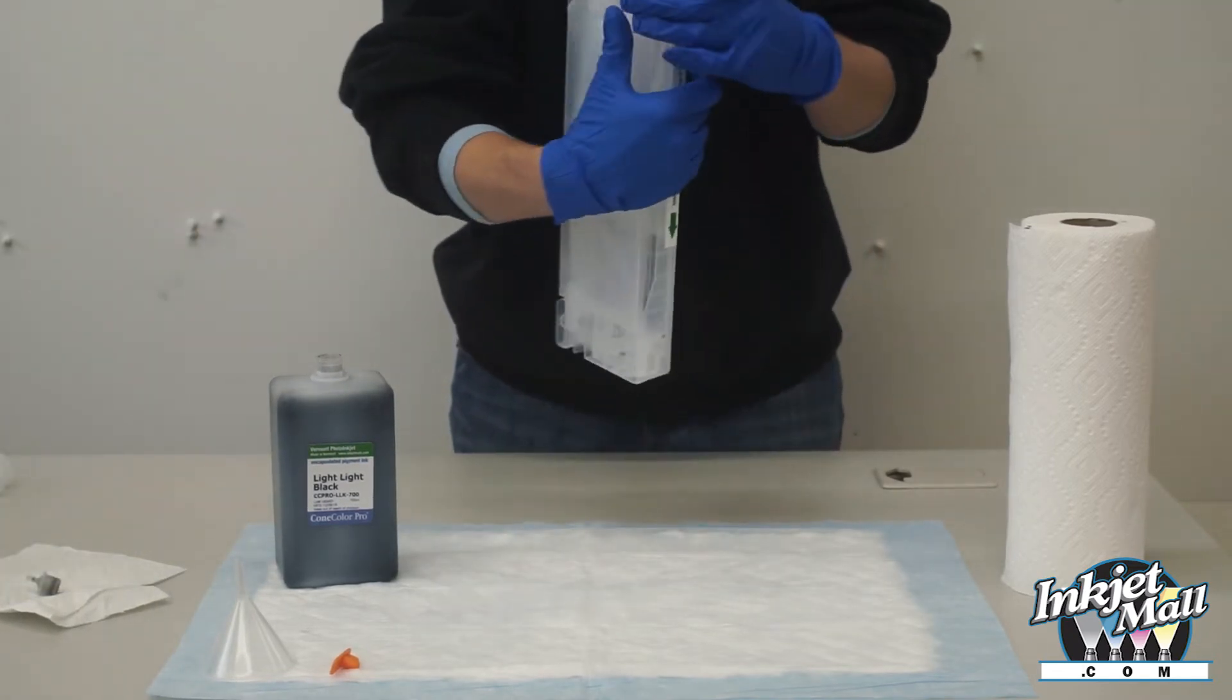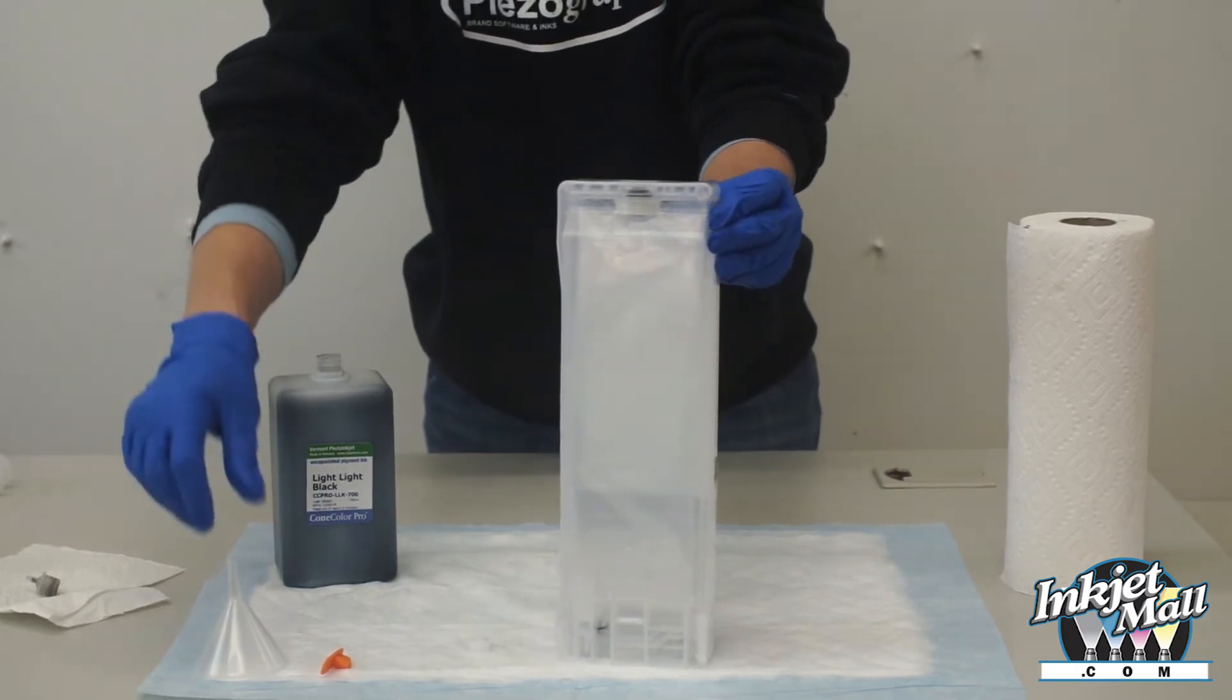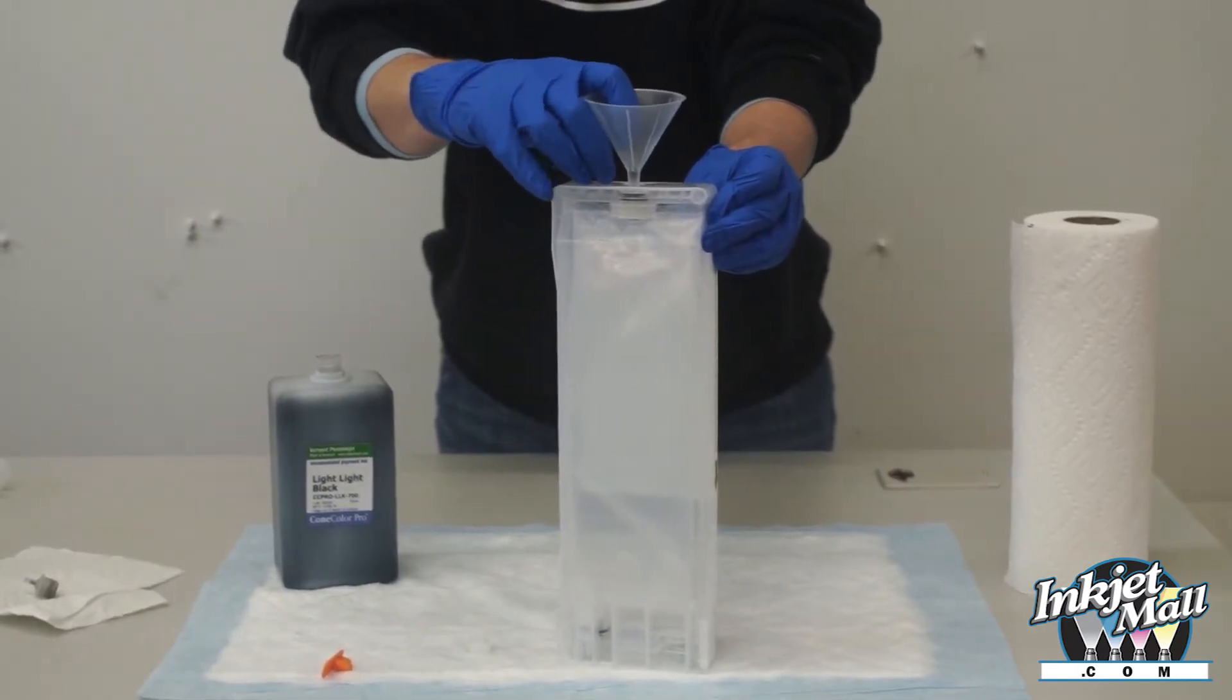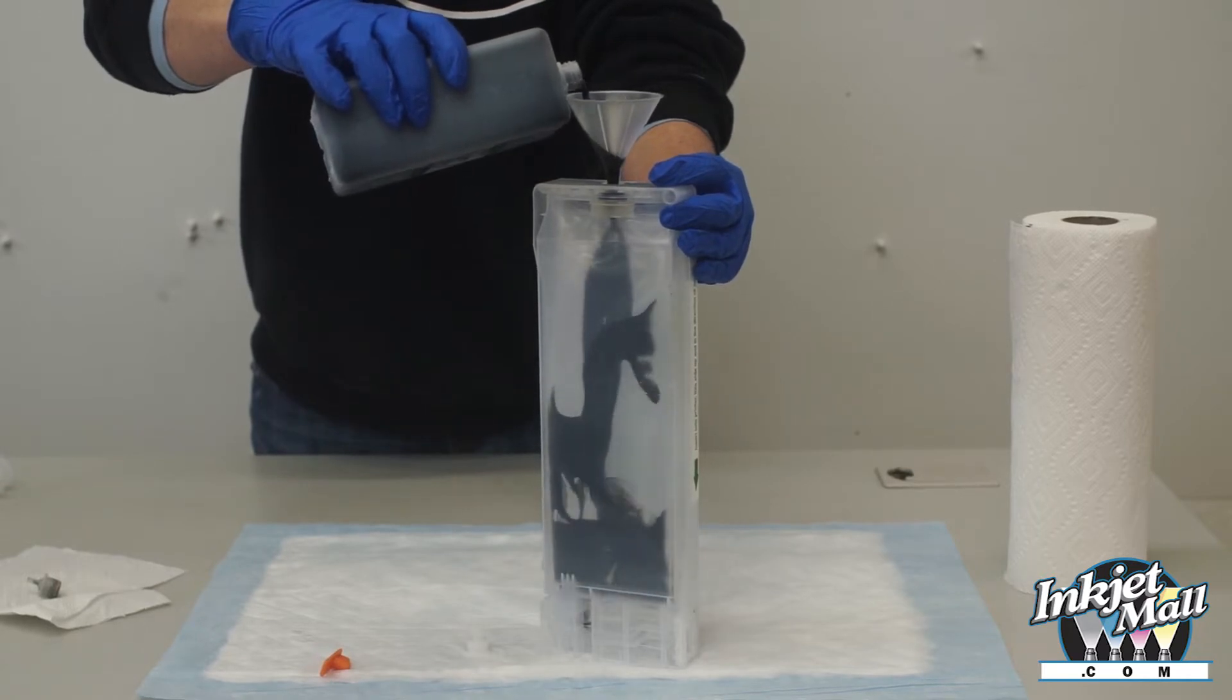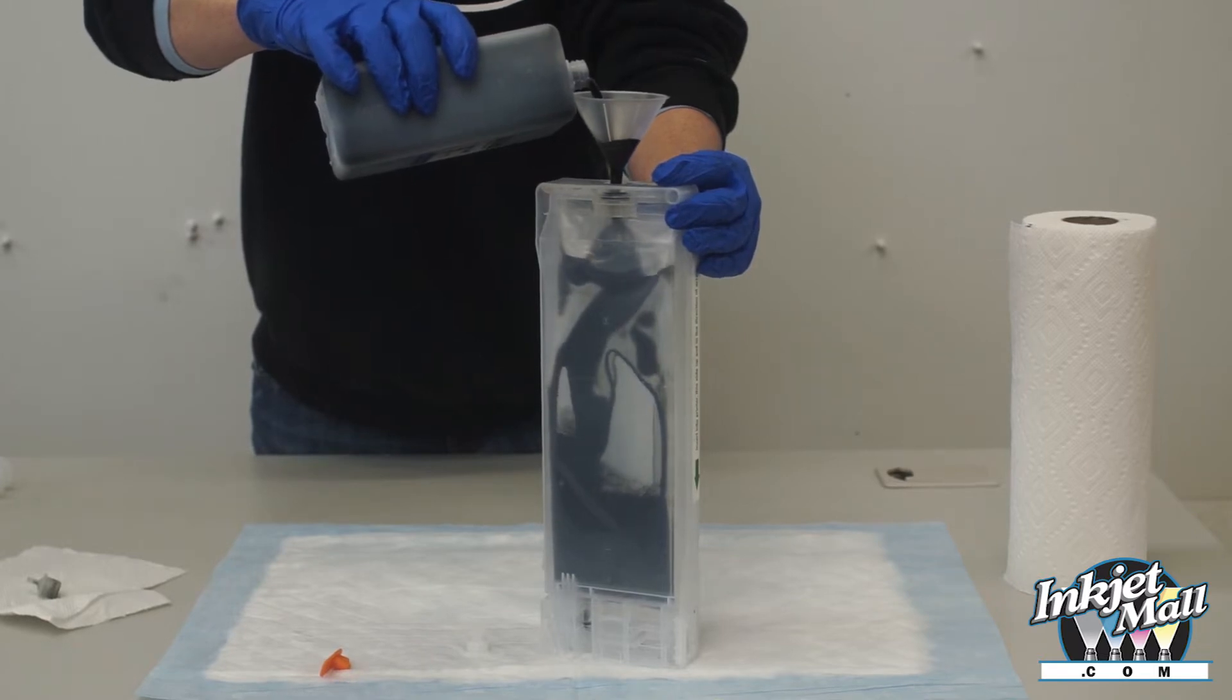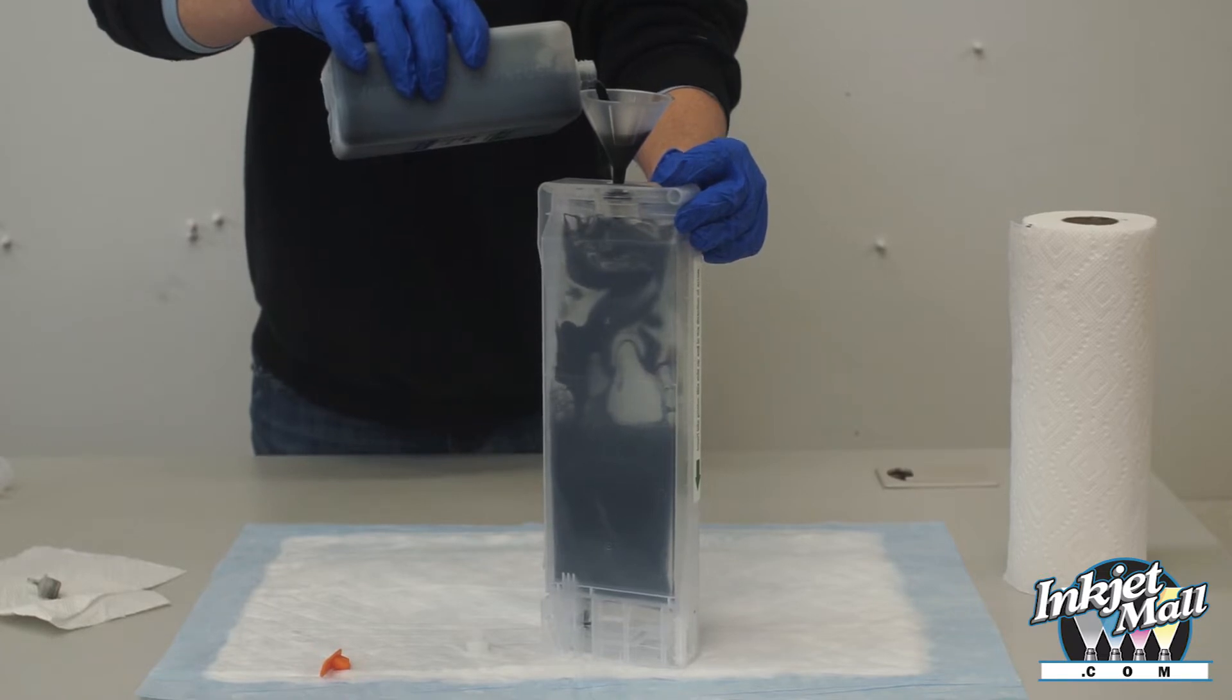Place the cartridge vertically, ink outlet down, fill hole up. Remove the silicone plug from the fill hole. Insert the fill funnel. Support the funnel and the cartridge with one hand. Pour ink with the other hand slowly into the funnel. We normally recommend that you pour the ink into the cartridge until the ink level is just below the fill hole, about one half centimeter or so. This will give you a good 700 mil of ink in the cartridge.